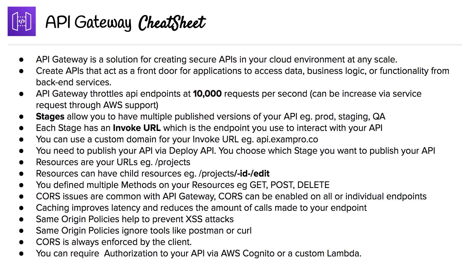Alright, so we're on to the API Gateway cheat sheet. API Gateway is a solution for creating secure APIs in your cloud environment at any scale. Create APIs that act as a front door for applications to access data, business logic, or functionality from back-end services.